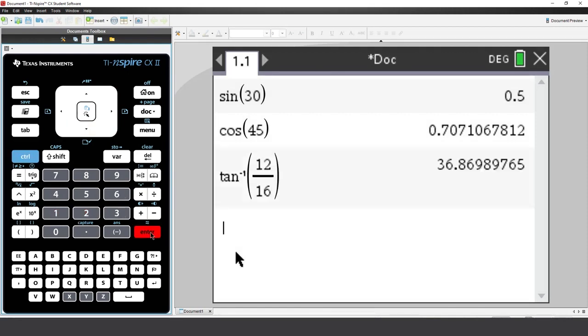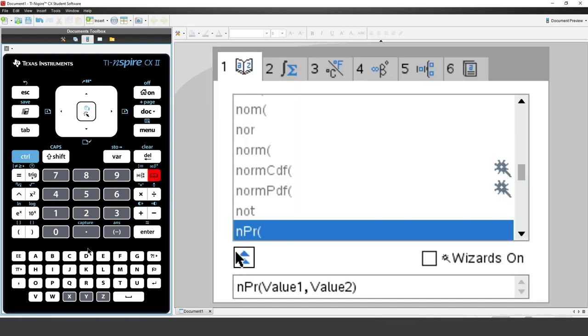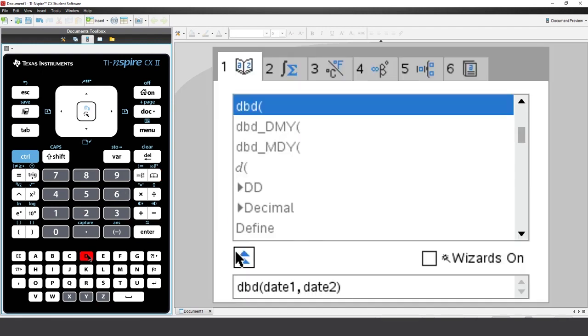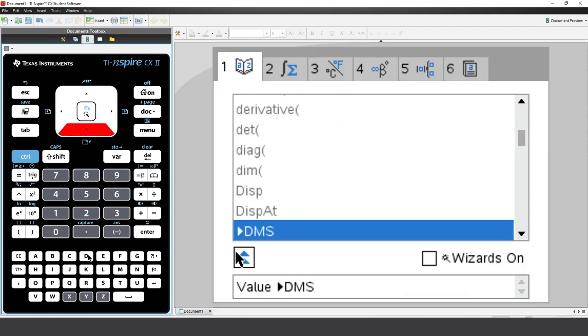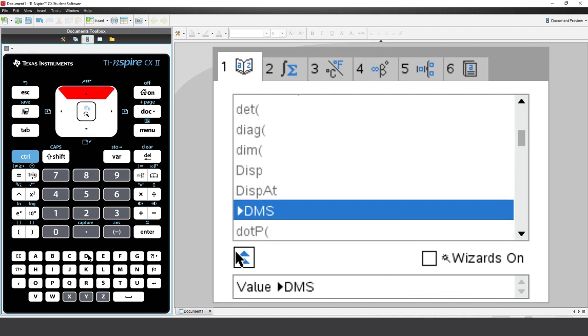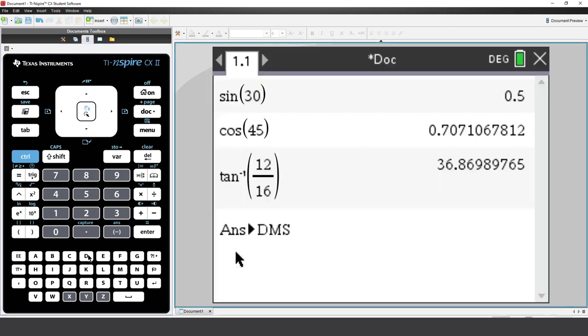If you want the angle in degrees, minutes, and seconds, use the catalogue. Press D to scroll down to D. Scroll down a little further and find convert to DMS - degrees, minutes, and seconds. The bonus of using the catalogue is that it remembers the last command that you used.